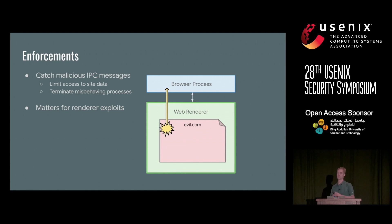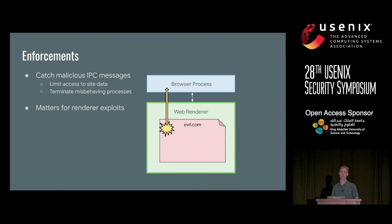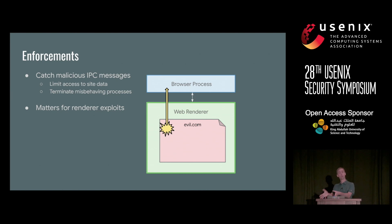Dedicated processes and filtering are sufficient to deal with memory disclosure attackers who can't lie to the browser process. But for renderer exploits, we also need to catch malicious IPC messages asking for more data than the renderer process is allowed to access. We have a notion in the browser process of what site a process is locked to, and if it asks for things from other sites it's not allowed to access, we can terminate the misbehaving renderer process before it does anything more.